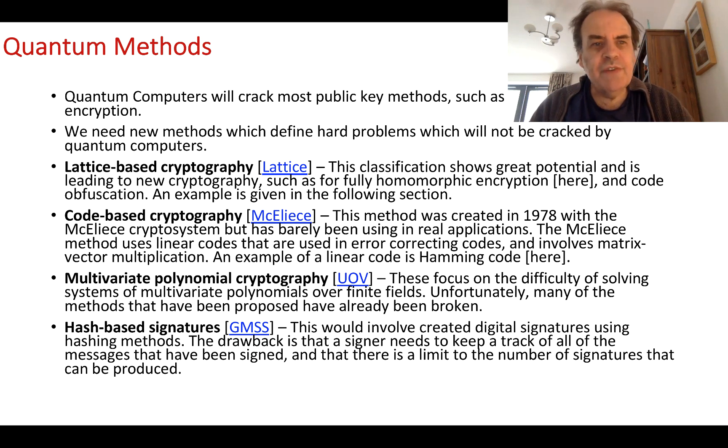The four basic classifications for quantum robust methods are lattice-based, where we can use the LWE method; code-based cryptography using error correcting codes; multivariate polynomial cryptography; and hash-based signatures. In this presentation, we'll look at lattice-based cryptography methods using LWE.